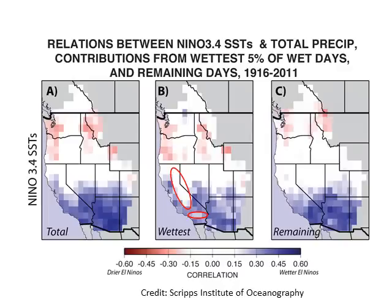Recent research from Scripps Institute of Oceanography showed that when you look at the relationship between El Niño and wet years — considering all storms together — there is a strong signal across Southern California. But when you focus on the very wet big storms, those big atmospheric rivers, they're not associated with El Niño. There is a signal in the San Bernardino Mountains and the Sierra Nevada, but most of the correlation is across Southern California only.